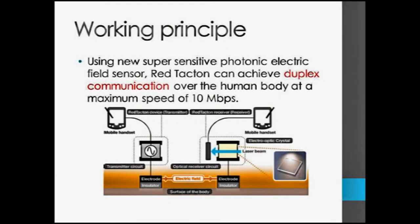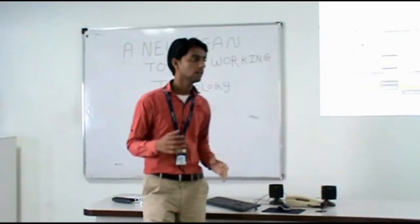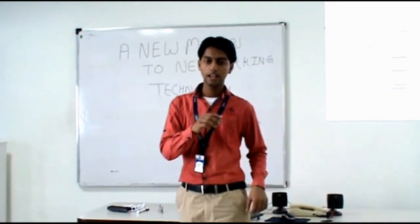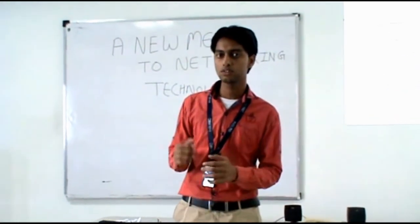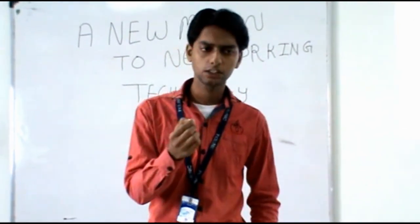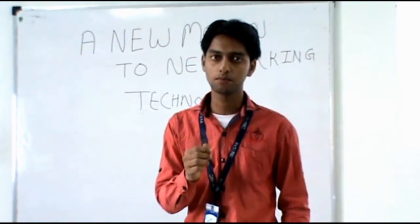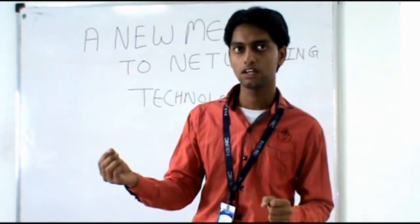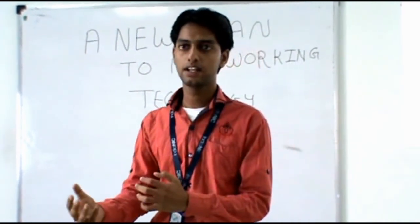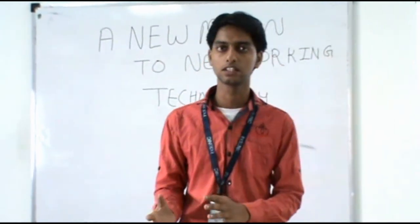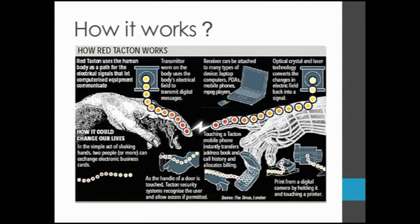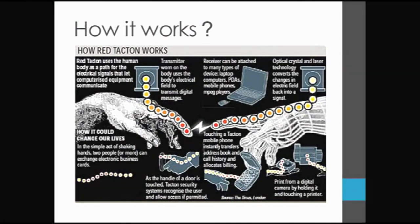What is the working principle of this technology? In this technology, the human body is used as an internet grid. The electric field of the human body is used for transmitting the data. The transmitter makes a small change in the electric field of the human body, and then transfers it — the electric field of the human body is used as a digital system, using a laser beam.